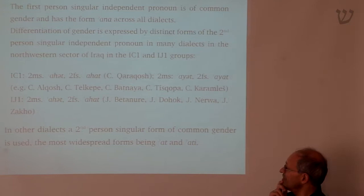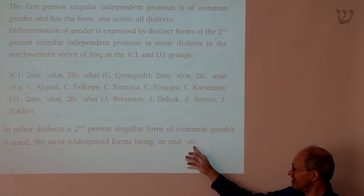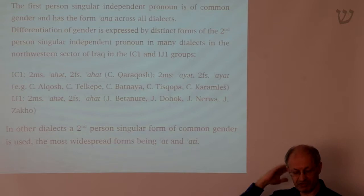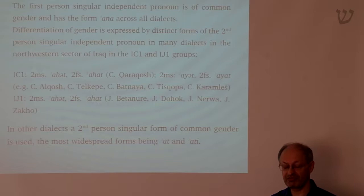Many dialects have the form 'at' or 'ati' for the second person singular without any distinction in gender. 'Ati' looks a bit like a feminine form if you know other earlier forms of Aramaic, but in fact many dialects use 'at' for both masculine and feminine, or they say 'ati' for both. 'Ati' is probably the most common pronoun in the NENA dialects for second person singular — you, masculine or feminine.